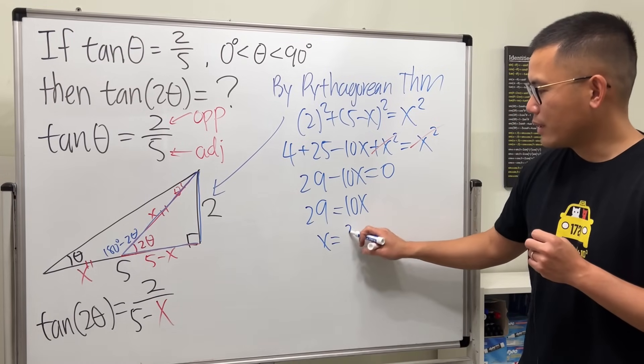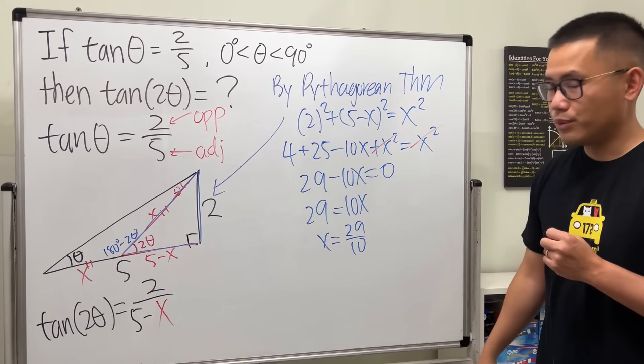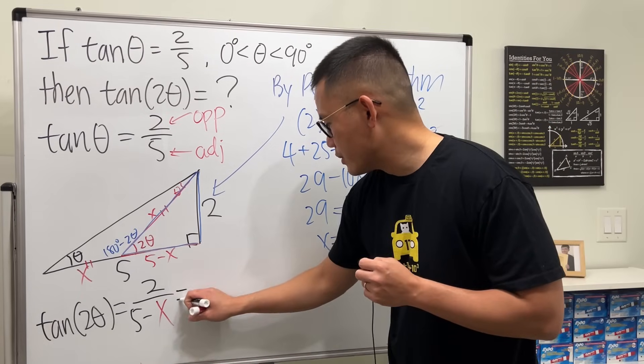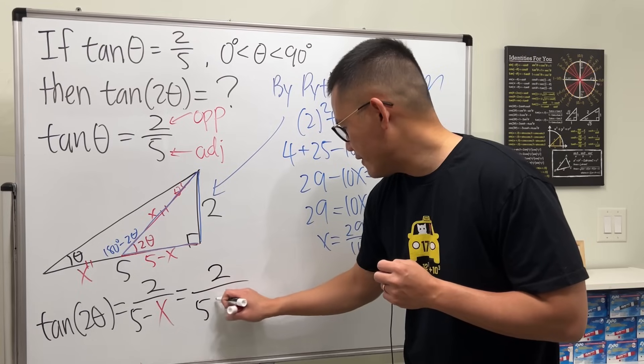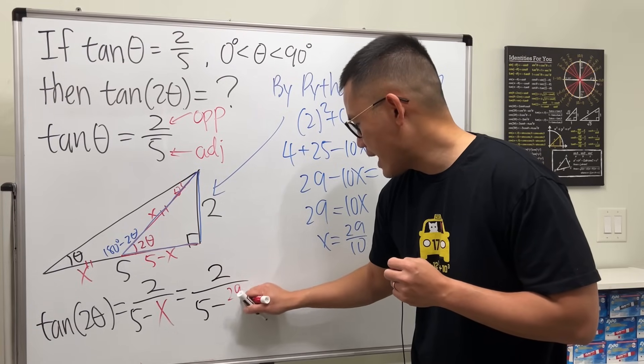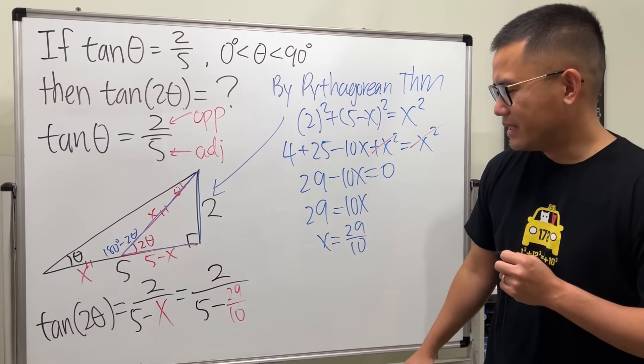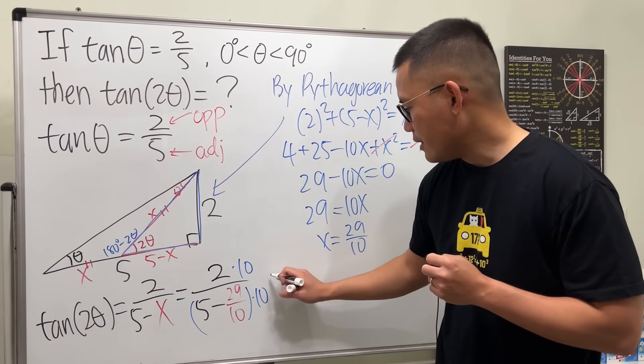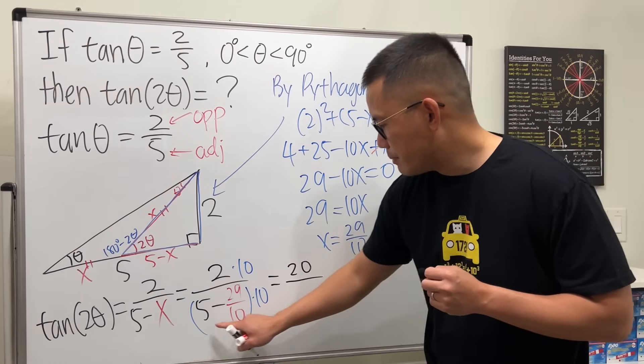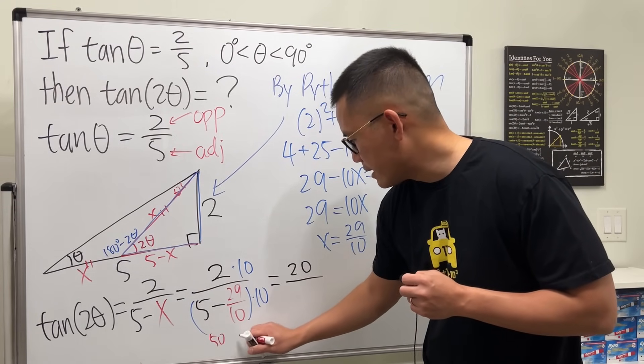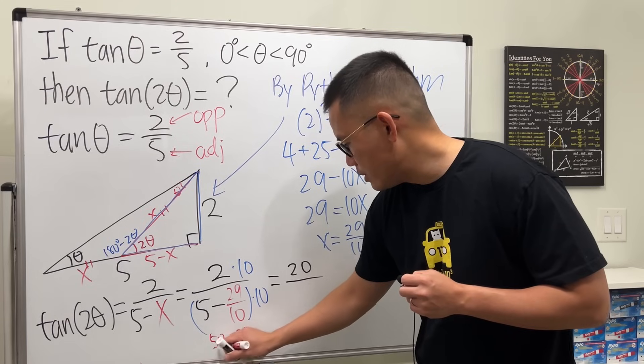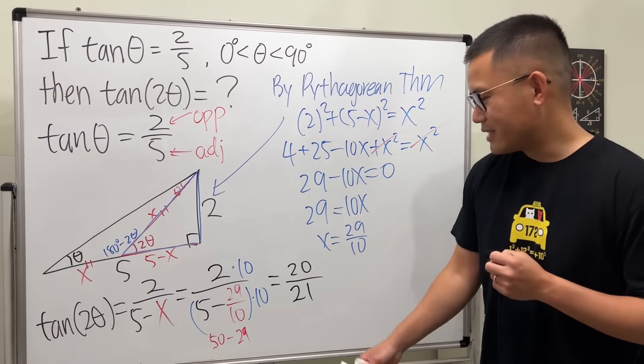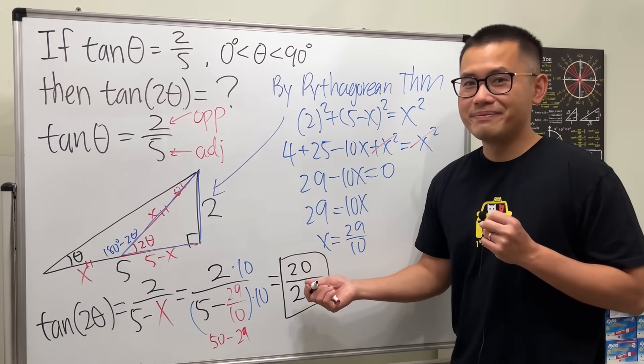And then we're pretty much done. Just plug that in here, so we have 2 over 5 minus 29 over 10. And to simplify this, perhaps let's multiply the top and bottom by 10, it's easier that way. On the top is 20, on the bottom that is going to be 50 and then minus this and that cancel, so minus 29. And the answer for that is 21, so the answer is 20 over 21. Yeah, just like that.